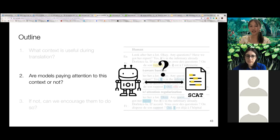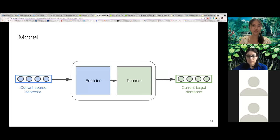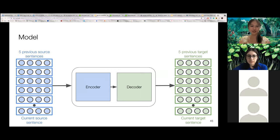So next, to evaluate whether models pay attention to the relevant context or not, we quantify how much model attention is aligned with SCAT. So for our experiments, we used a standard transformer translation model, but instead of only taking the data sentence by sentence as we do for sentence-level translation, we incorporate the five previous source and target sentences as the context by simply concatenating them to the current sentence that is then fed into the model.